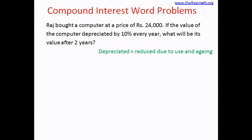Depreciated means reduced due to use or aging. When you use a computer, machinery, or your car for some time, because of its usage and aging, its value reduces — that is called depreciation. So the value is depreciated here by 10%. The original value is 24,000, so P is 24,000, and N, which is the number of years, equals 2.